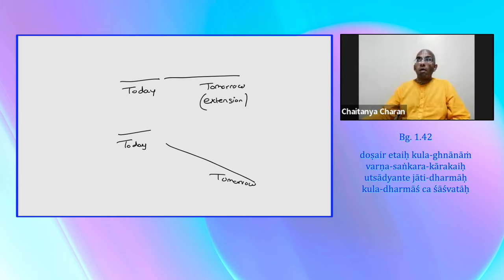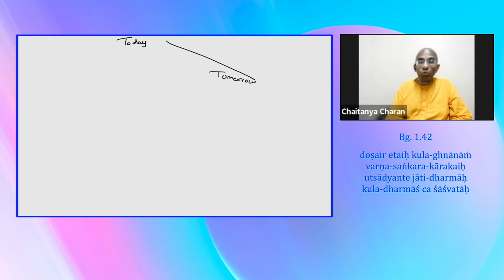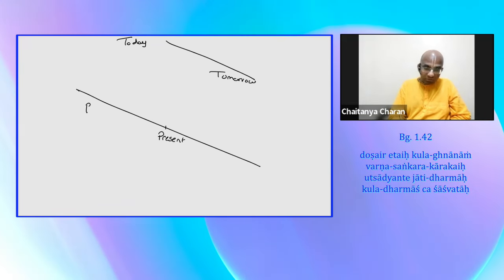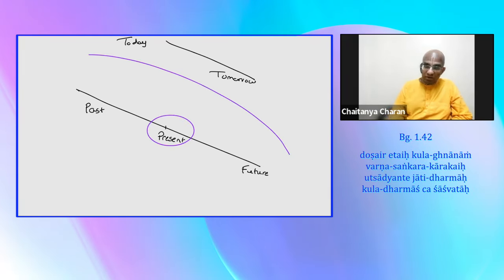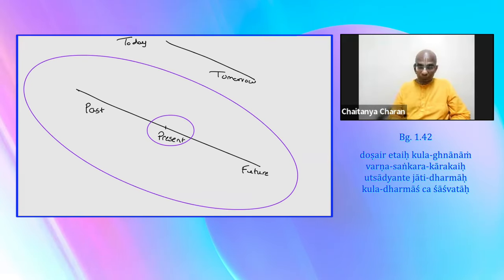Arjuna is here approaching this war, not just from the perspective of the present. You consider there's the past, this is the present, and there's the future. Arjuna is thinking not just in terms of the present or the immediate context around the present. He's seeing the bigger past and the bigger future, the distant past also, and the distant future also.